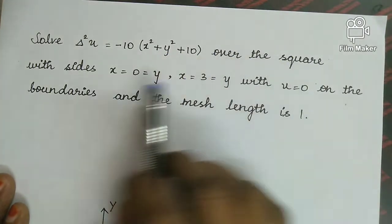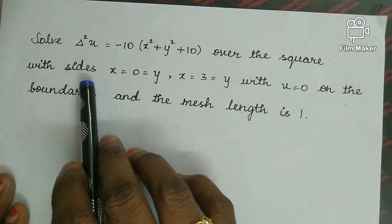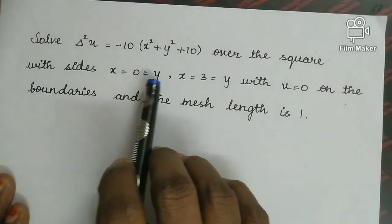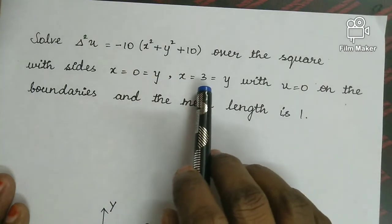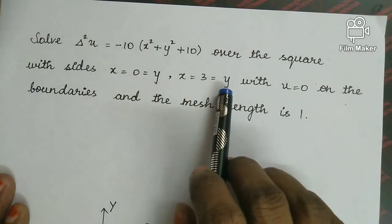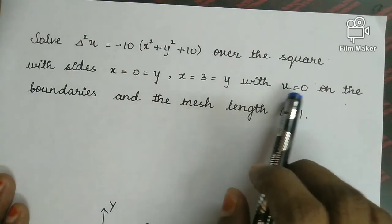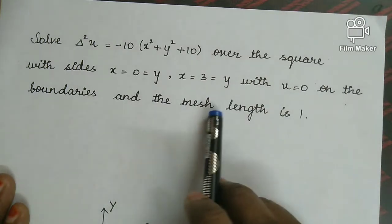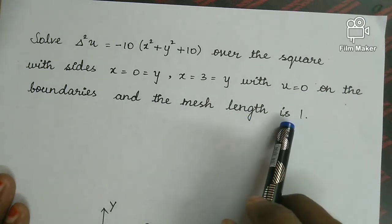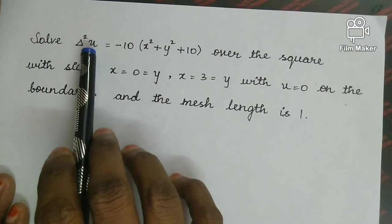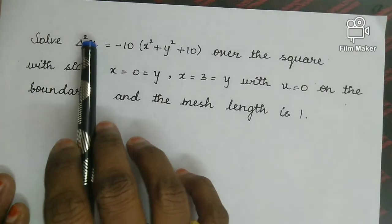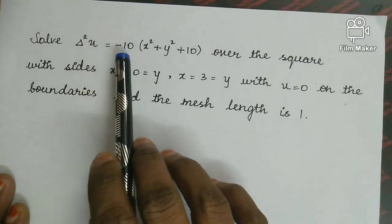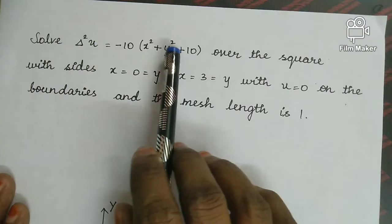Now let's solve the first example. Solve del-squared u equal to minus 10(x squared plus y squared plus 10) over the square region with x equal to 0 and x equal to 3, y equal to 0 and y equal to 3, with boundary condition u equal to 0, and mesh length equal to 1.